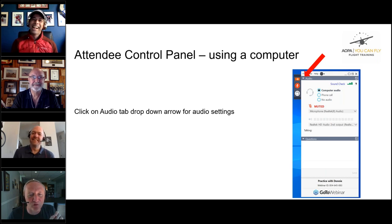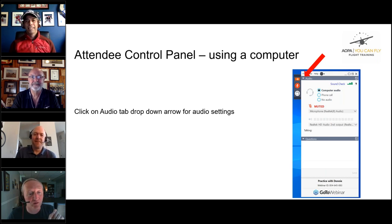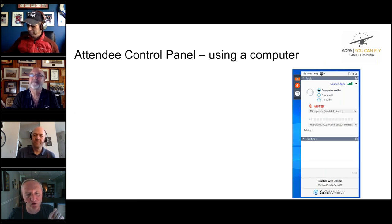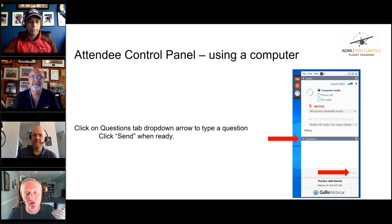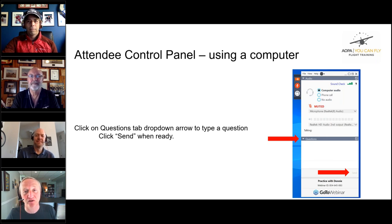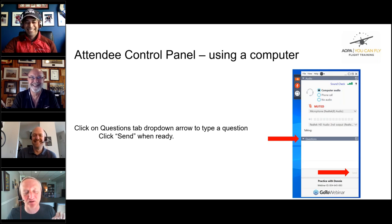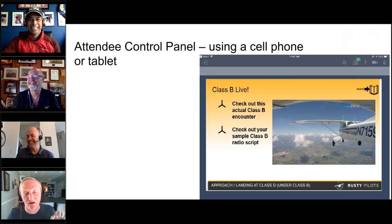If you look at the little triangles, you can see the audio options and pick what audio setting you want. If you want to ask a question, you'll be interacting with our producer Stephen, who is on the call but not on camera. Stephen, say hi. Stephen: 'Hello everyone.' Stephen will be happy to interact with you.